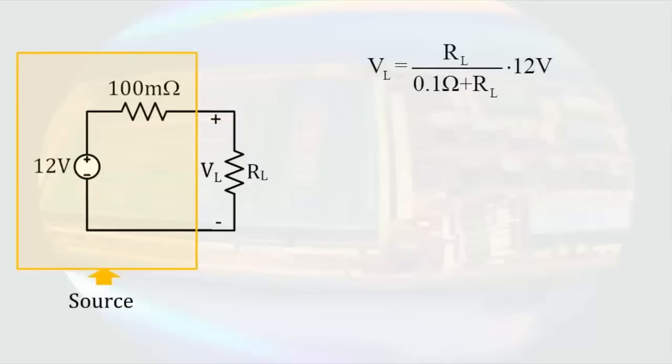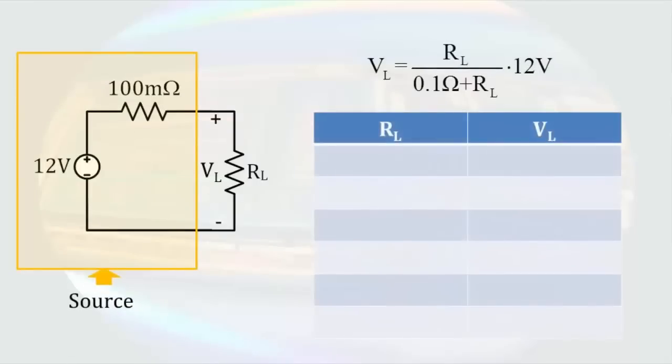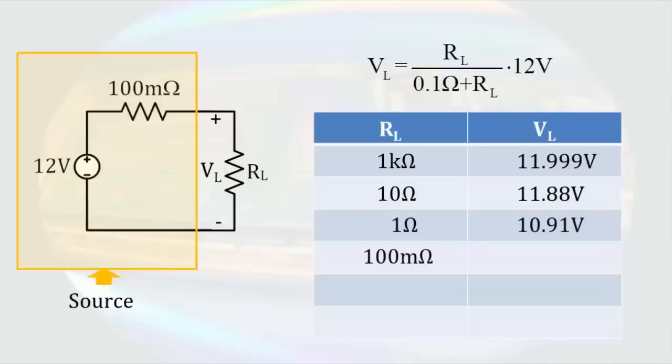If we start looking at the output voltage by looking at a fairly large load resistor, for example 1 kilo ohm, we find the output voltage is nearly 12 volts. I do ask you to forgive me a little for playing loose with significant figures for this illustration. If we decrease the load resistance to 10 ohms, we find the output voltage decreases by just slightly more than a tenth of a volt. A load resistor of 1 ohm results in the output being slightly more than a volt below the ideal. When our load resistance matches the resistance of the source, we get exactly half the ideal output.